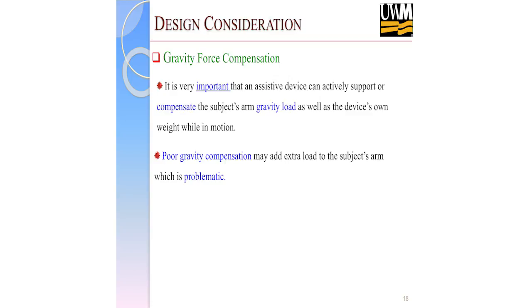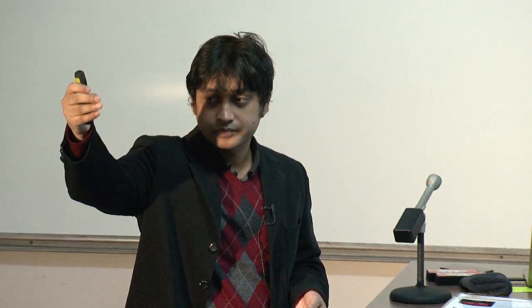Gravity force compensation is critical for exoskeleton-type robots that are worn on the arm. The robot should actively compensate the gravity of both the subject and the robot links. If the robot is in a raised position and the power cuts off, it may fall, which could be harmful. You need to think about how to compensate this gravity — some researchers use spring and wire mechanisms or magnetic brakes.